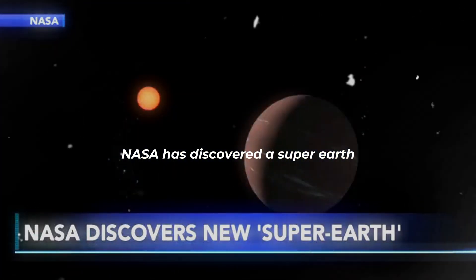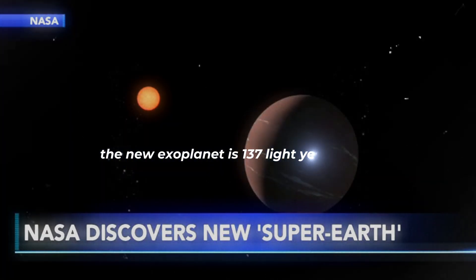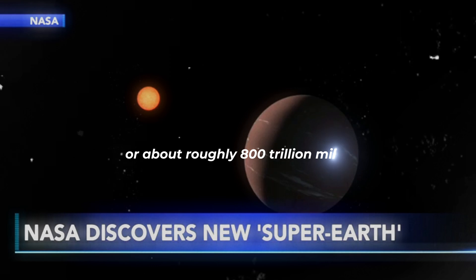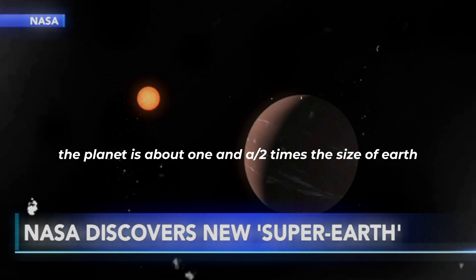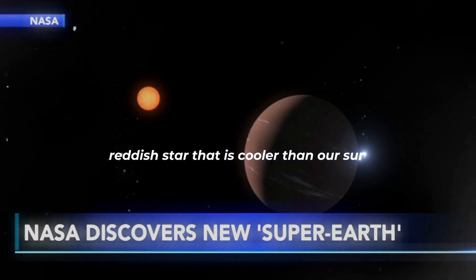NASA has discovered a super-Earth that could have conditions to sustain life. The new exoplanet is 137 light-years away, or about roughly 800 trillion miles. Astronomers say the planet is about one and a half times the size of Earth and orbits a small reddish star that is cooler than our sun.